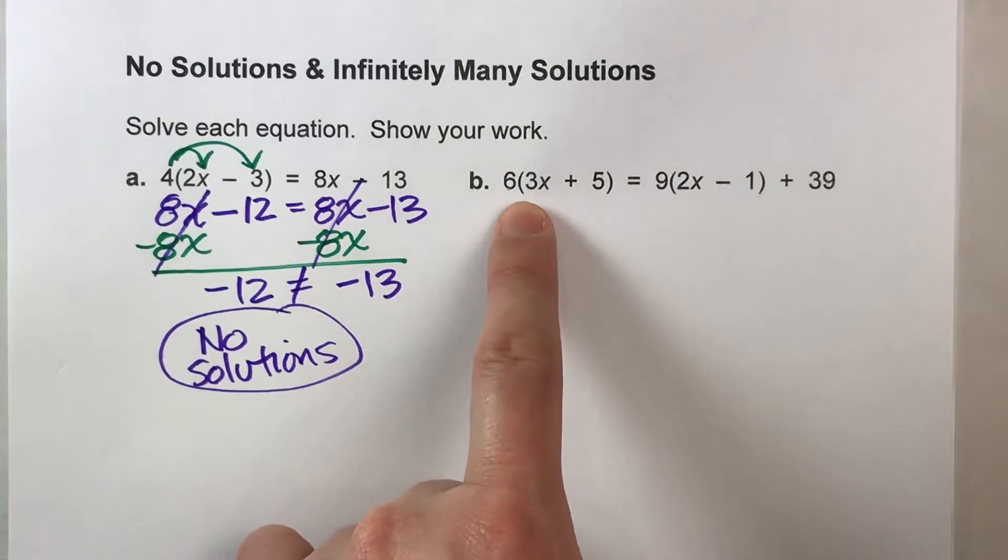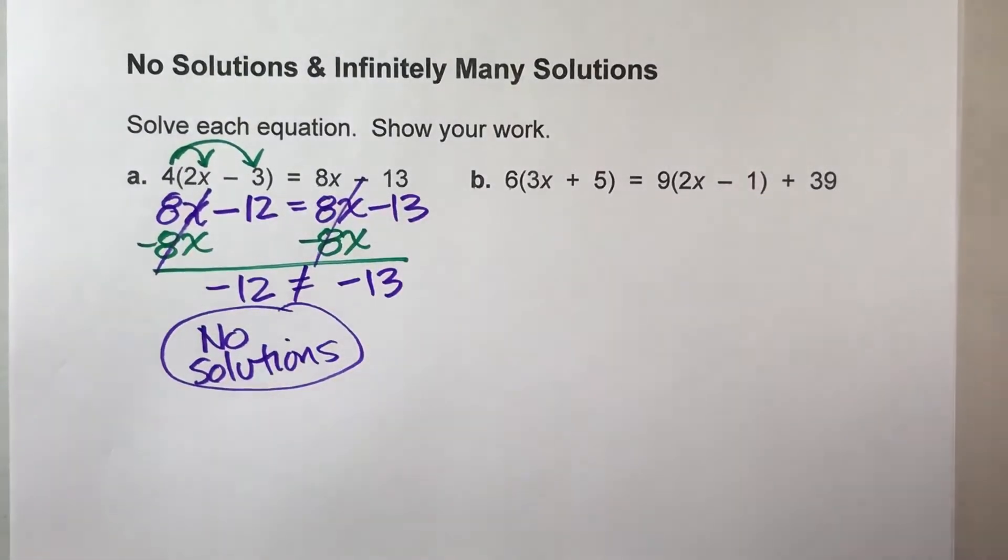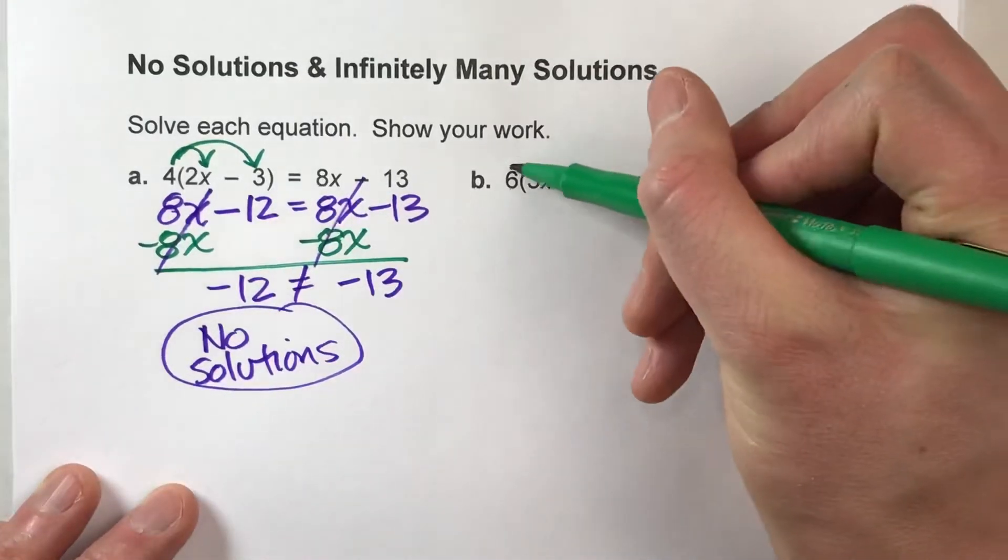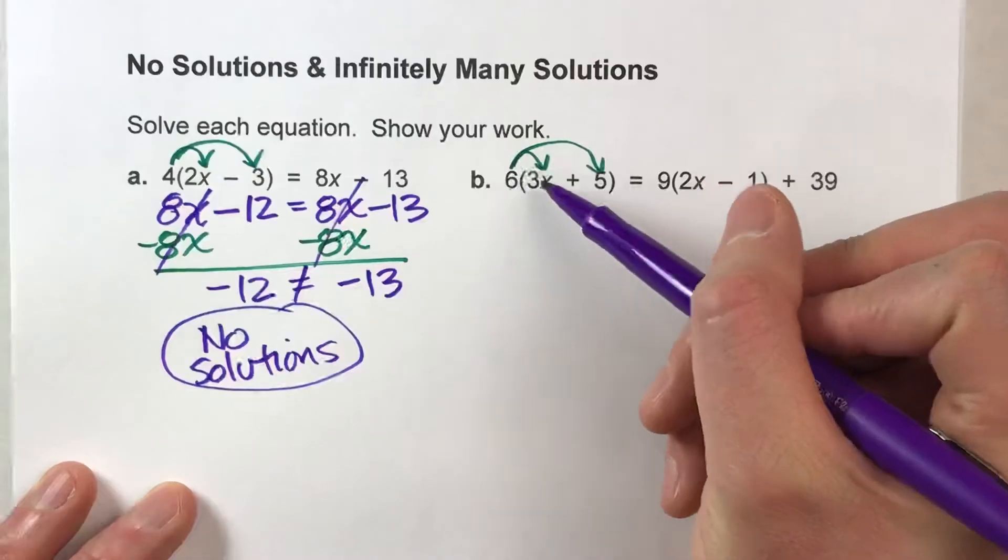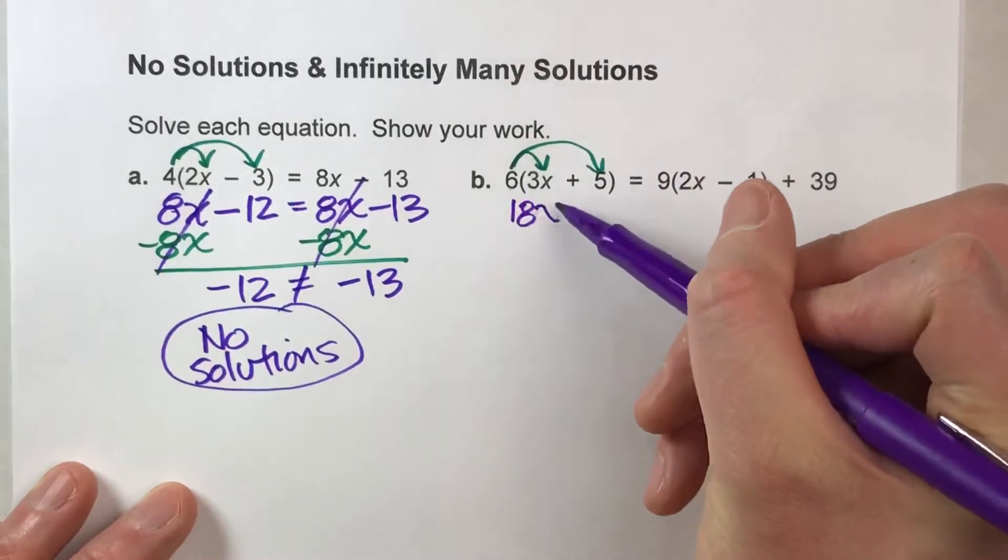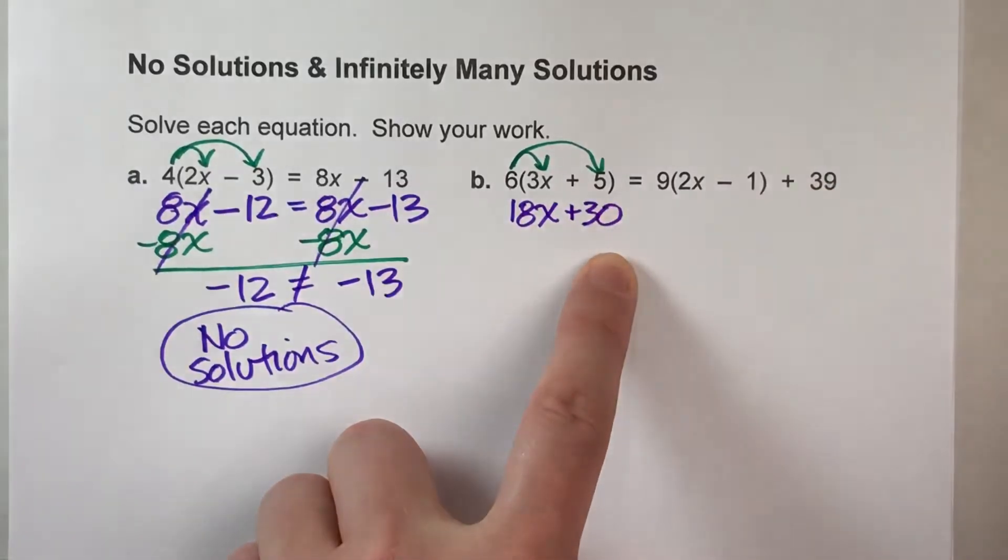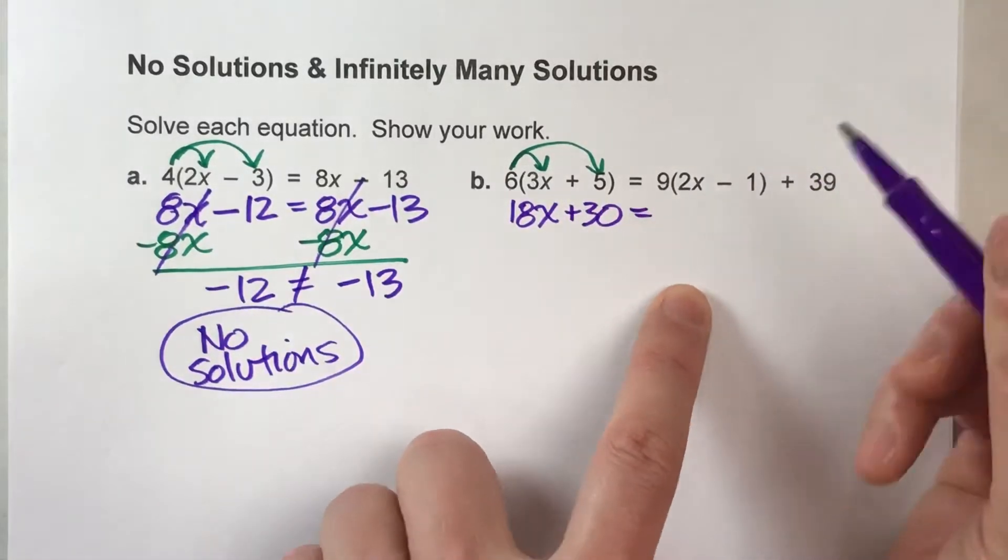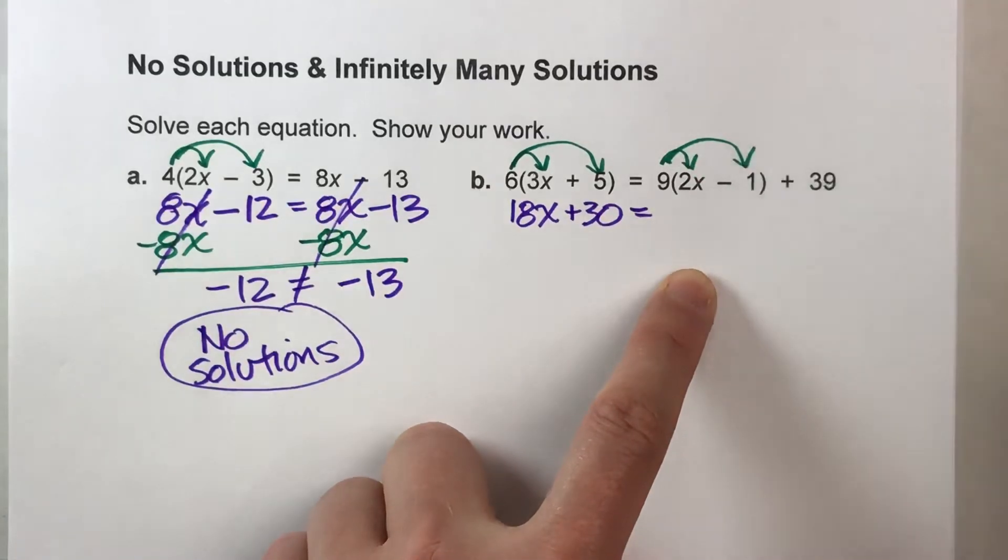We've got 6 times parentheses 3x plus 5 equals 9 times 2x minus 1 plus 39. So this is a bigger one. But let's do our distributive property here. And let's go through and start simplifying and solving it. 6 times 3x is 18x plus 6 times 5 is 30. Equals drops down. On the other side,